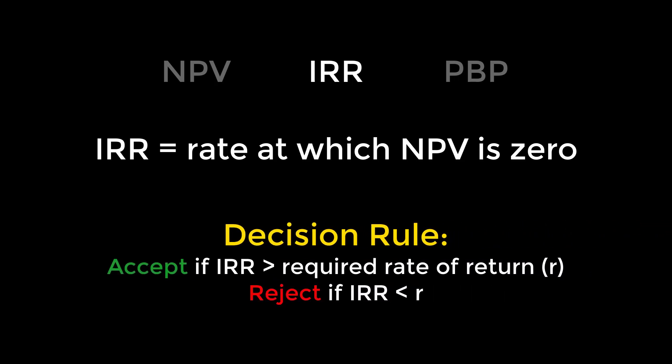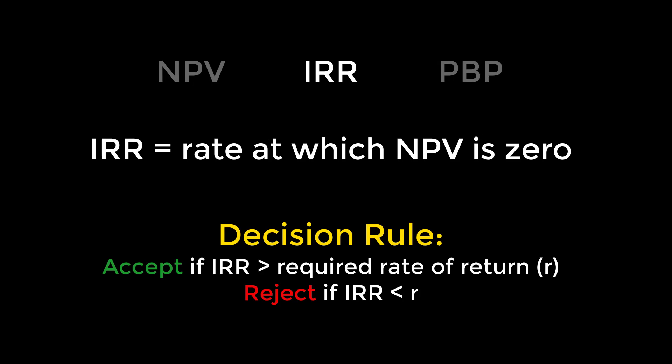Our second measure is the internal rate of return, or the rate at which NPV would be zero and we would be indifferent to the investment. When we're deciding if we should accept or reject the project on the basis of IRR, our rule should be to accept the project if IRR is greater than the required return rate, and to reject it if it is less. If we were to do the calculation by hand, we would have to use trial and error. The alternative is to use a financial calculator. Let's revisit the same problem from before and redo it using the IRR method.